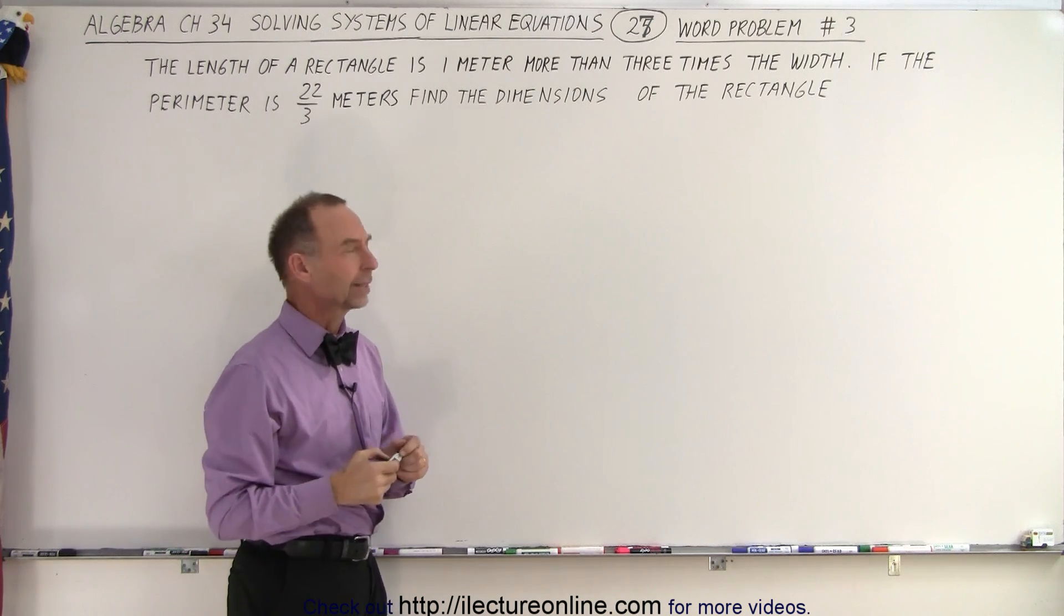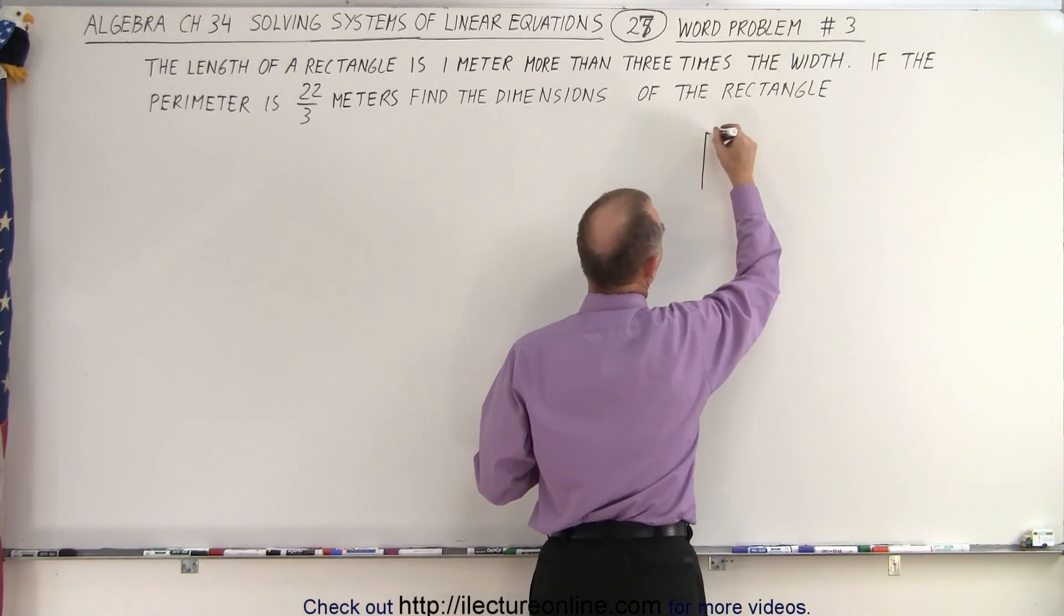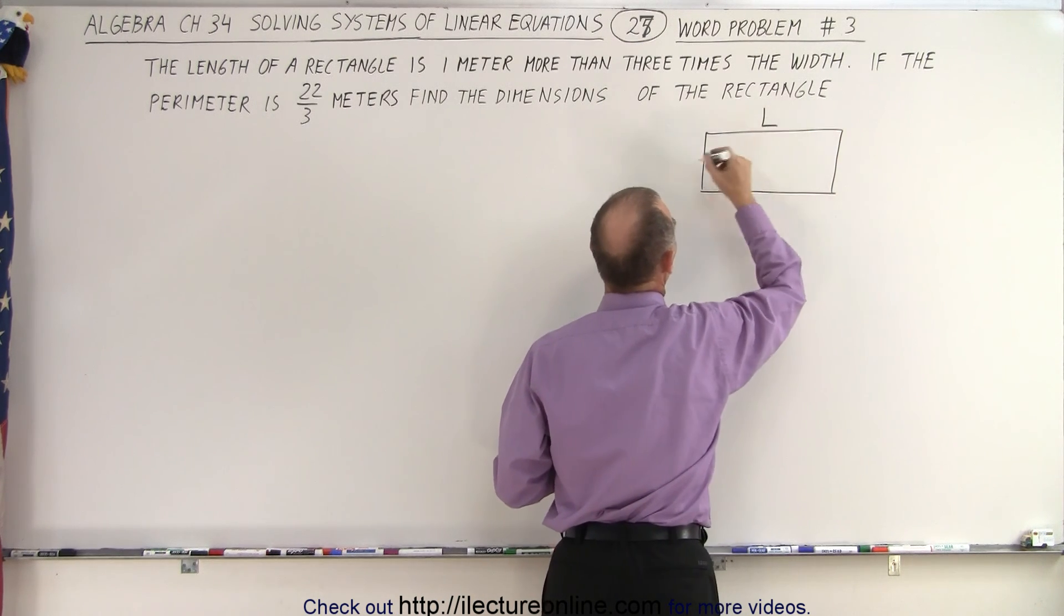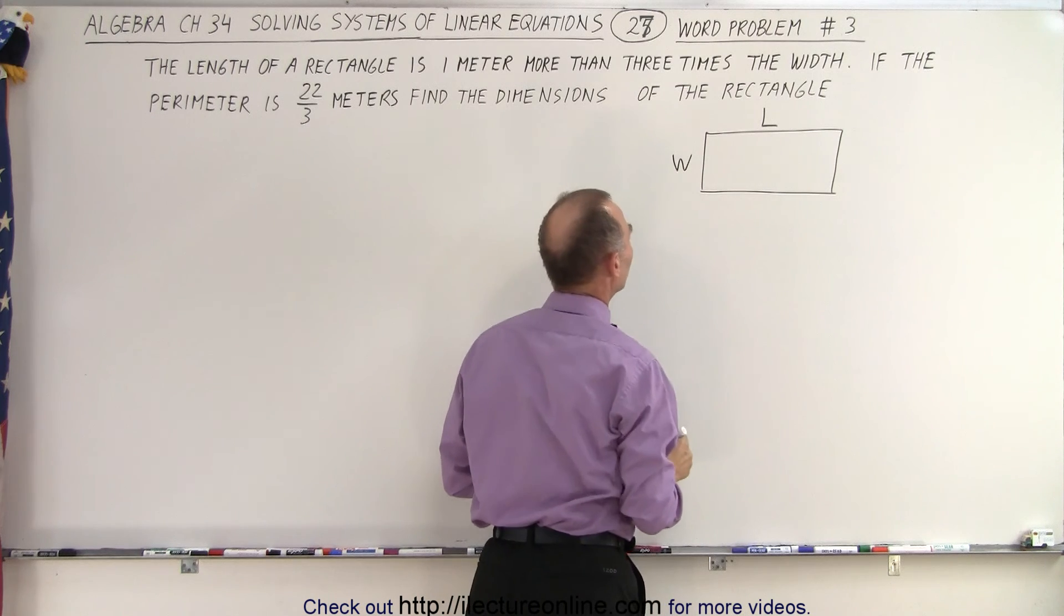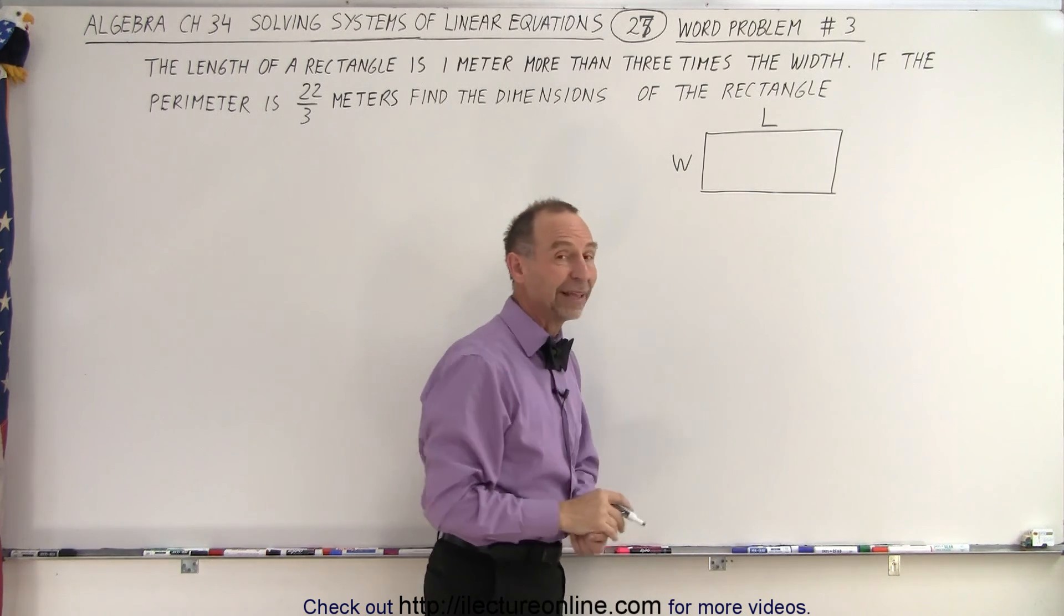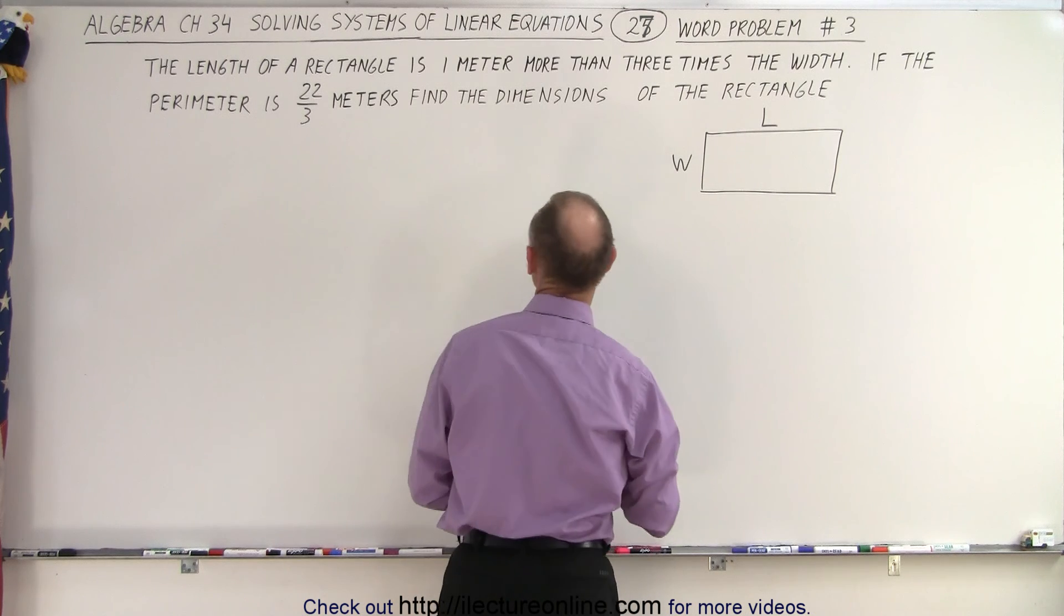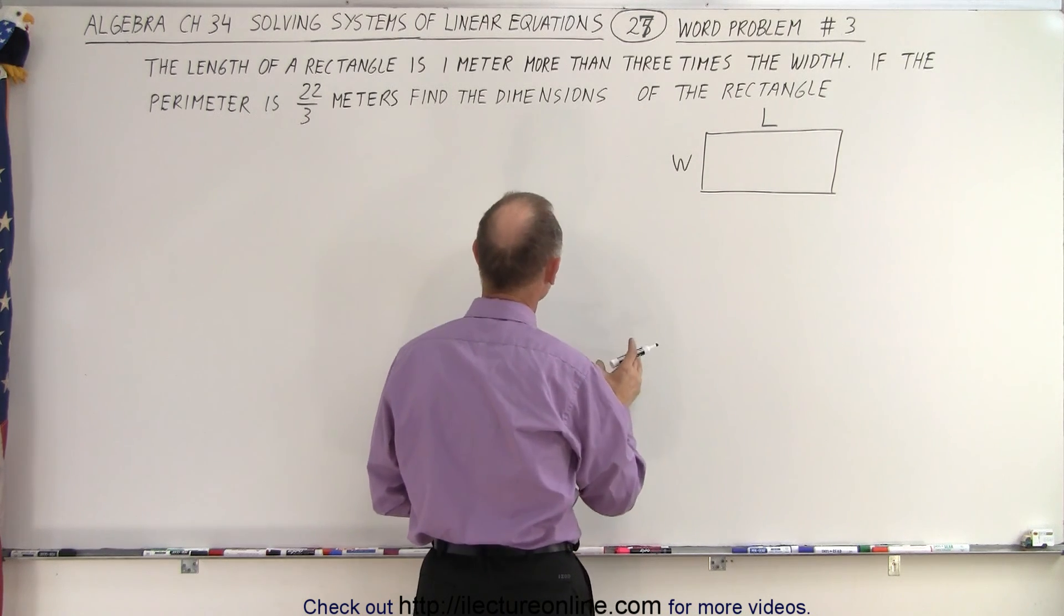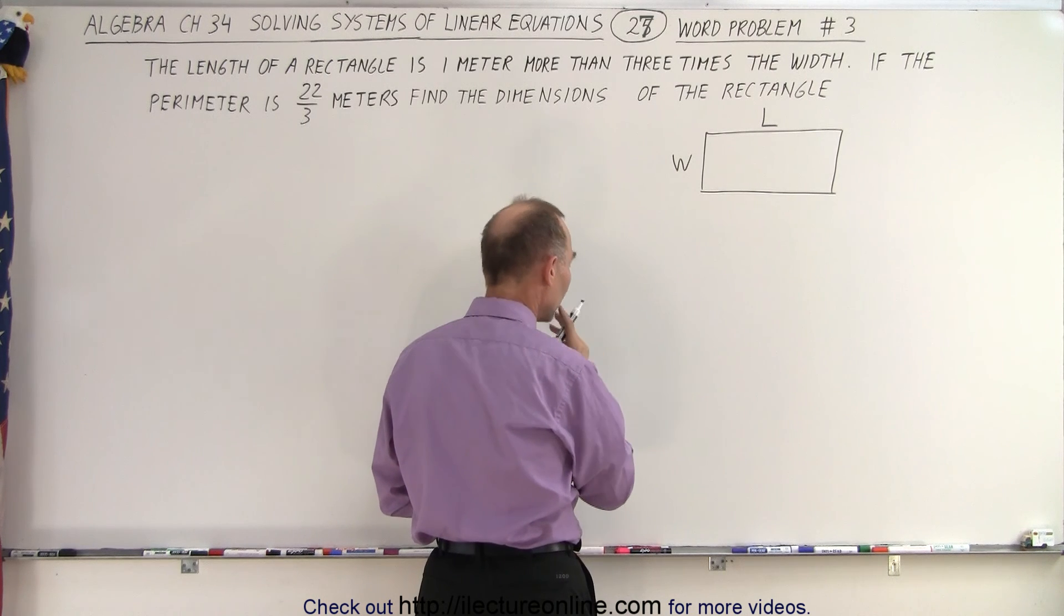So let's draw a rectangle. A rectangle will look something like this. We have the length and we have the width. So we're going to let L represent the length and W represent the width. Now we read and we see that the length of a rectangle is one meter more than three times the width.